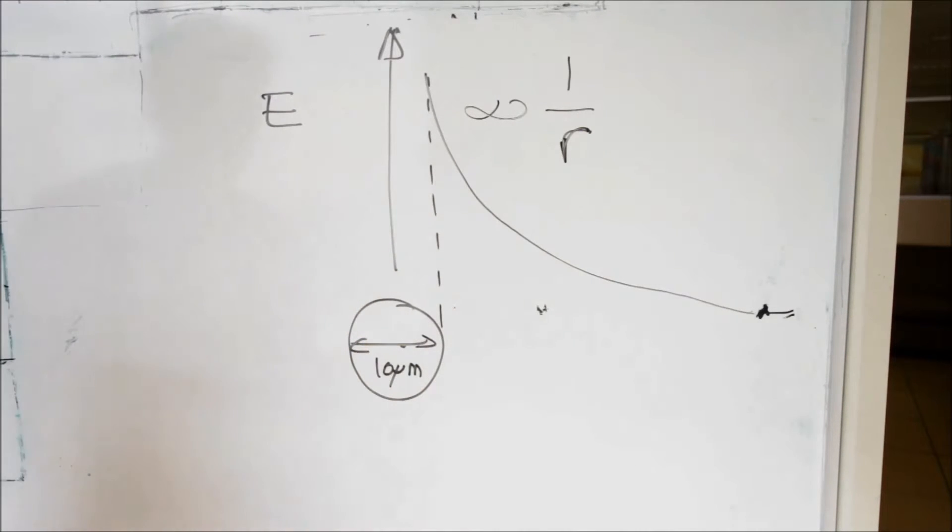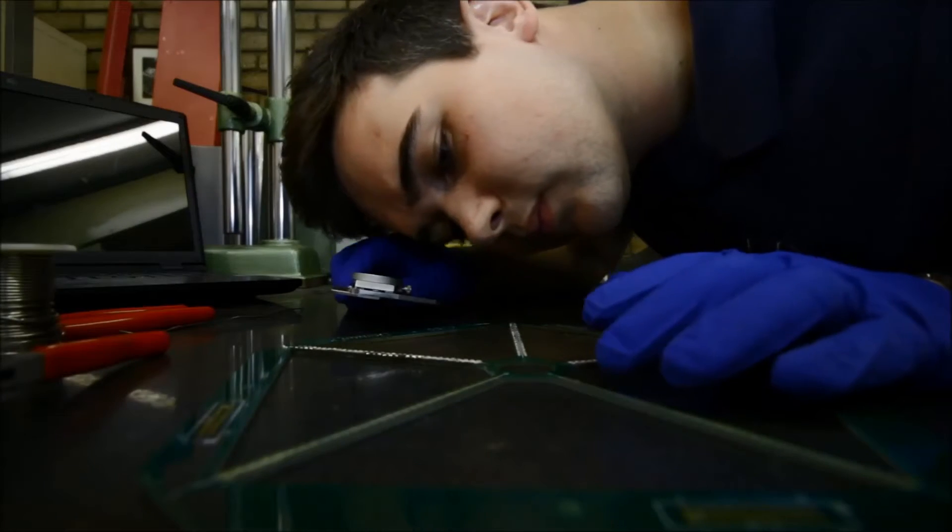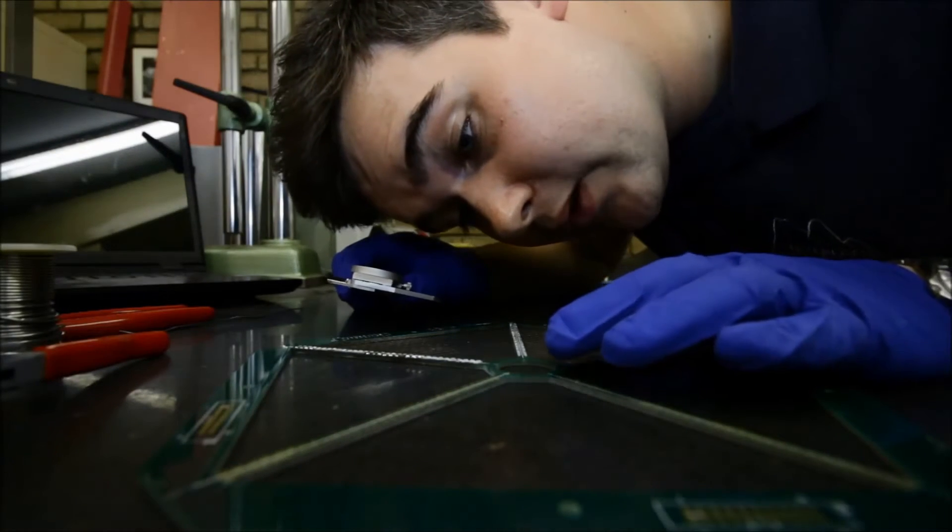Obviously we try to use the thinnest wires that we can, 10 micrometers being about a tenth of the diameter over here. A millimeter divided by a thousand and then multiplied by ten again. Yeah, ten millionth of a meter. That's ten micrometers.